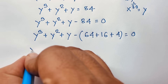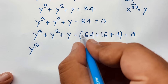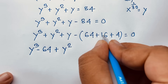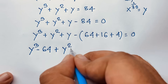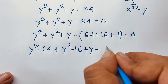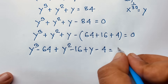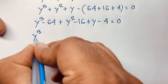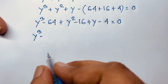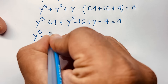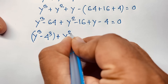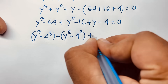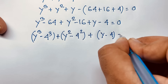I now group the terms: y cubed minus 64, plus y squared minus 16, plus y minus 4, equals 0. Notice that 64 is 4 to the power 3, and 16 is 4 to the power 2. So we have y cubed minus 4 cubed, plus y squared minus 4 squared, plus y minus 4, equals 0.